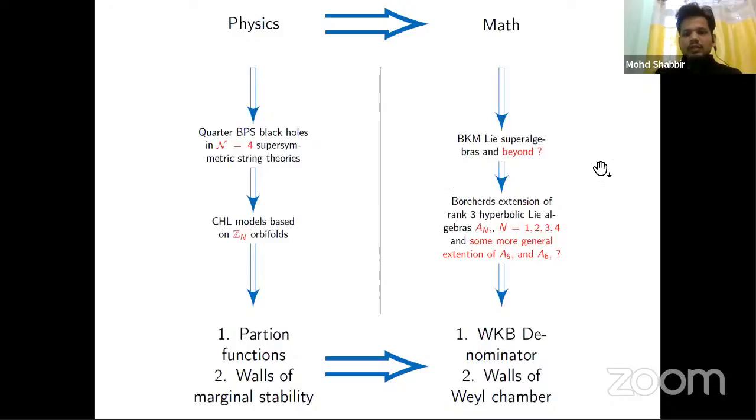On the other hand, the math point of view: we talk about Borcherds superalgebra and beyond. This is the work where we're trying to find things out. This means there will be a Borcherds extension of some rank three hyperbolic Lie algebras for A_n, n = 1, 2, 3, and 4, and some more general extension of A_5, A_6, and A_8 theory. There we will find some WKB, walls of Weyl chambers, Weyl denominator identities, and relation between them.